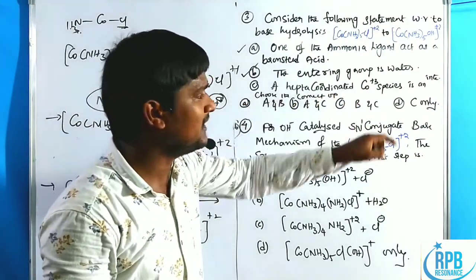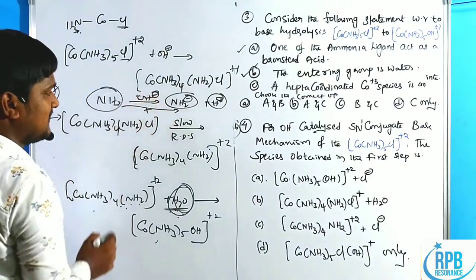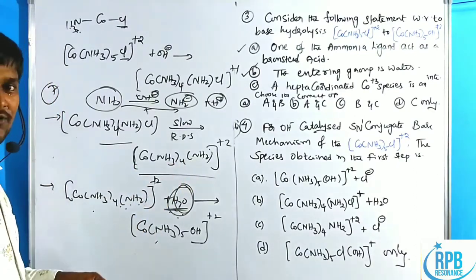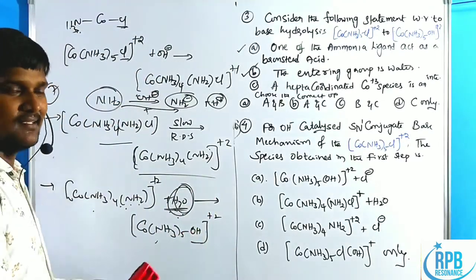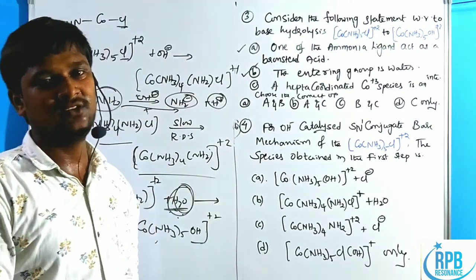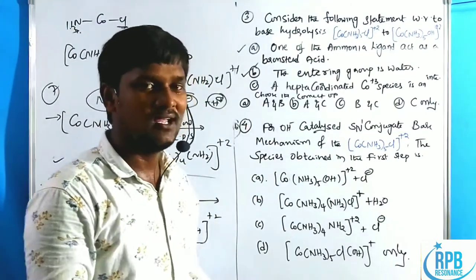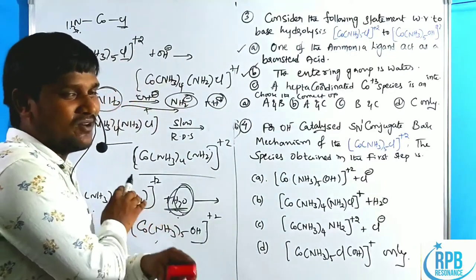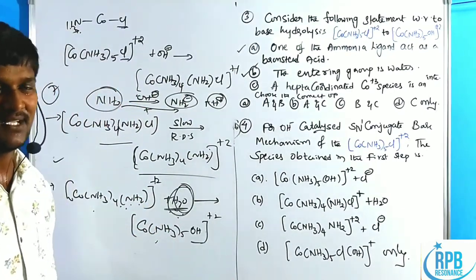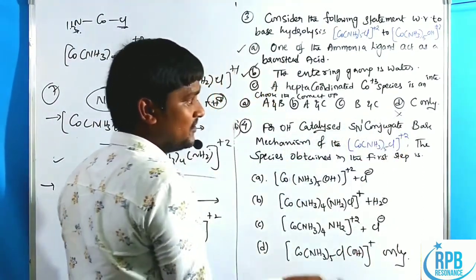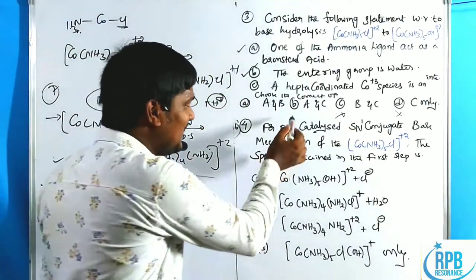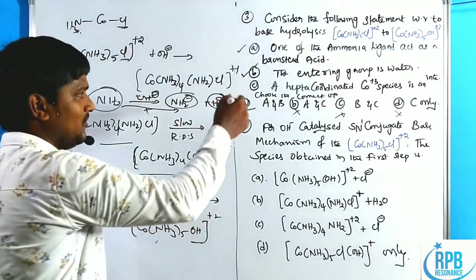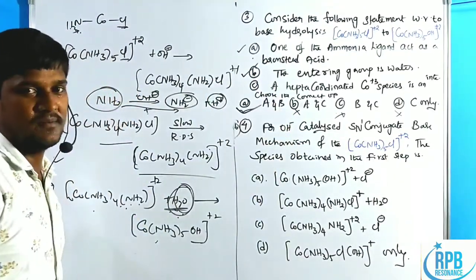Option C — intermediate is hepta-coordinated. The intermediate formed after the rate-determining slow step is a five-coordinated (penta-coordinated) system, not hepta. Hydrolysis reactions follow dissociative mechanism, so coordination number decreases from six to five. C is wrong. Therefore, any option containing C is eliminated. Since A and B are correct and C is wrong, the option containing only A and B is our answer.